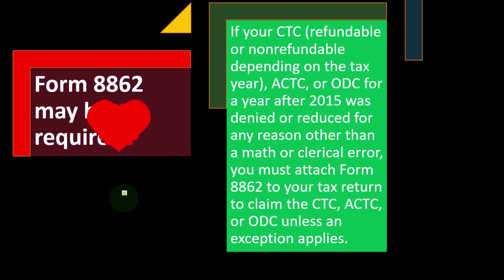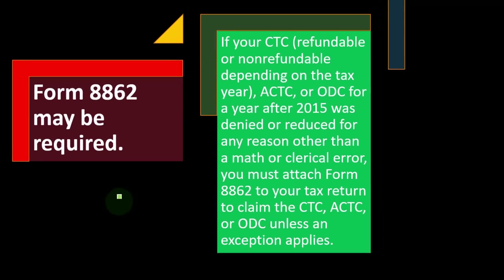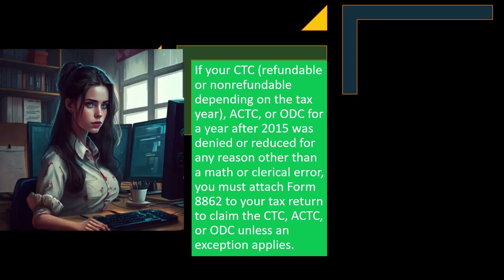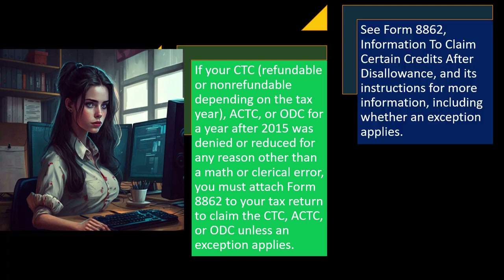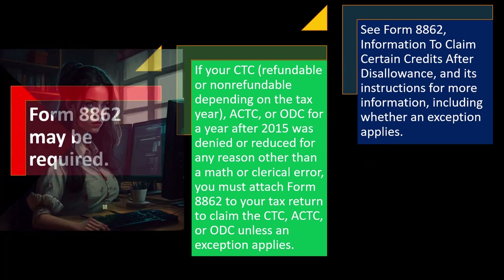Form 8862 may be required. If your CTC, ACTC, or ODC for a year after 2015 was denied or reduced for any reason other than a math or clerical error, you must attach Form 8862 to your tax return to claim those credits, unless an exception applies. See Form 8862 — 'Information to Claim Certain Credits After Disallowance' — and its instructions for more information, including whether an exemption applies.